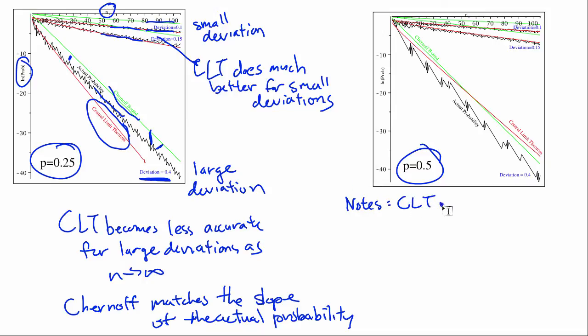CLT is based on a second order Taylor expansion. So that's why it's an approximation because it doesn't go all the way with the expansion. And so it's really close in the beginning, but then it starts to fade away while Chernoff remains persistent in following the slope of the actual probability.